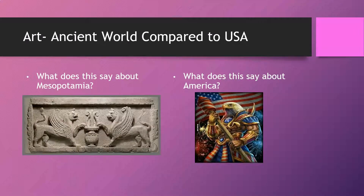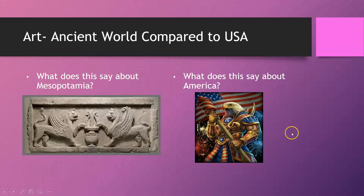Art reflects culture, and culture reflects art. Here's a piece of Mesopotamian art in stone — you can see it's a religious piece. When you look at Mesopotamian art, a lot of it was religious, so the art reflects that they are a religious people. And if you look at this American art, it tells you all you need to know about America. Art reflects culture and culture reflects art.